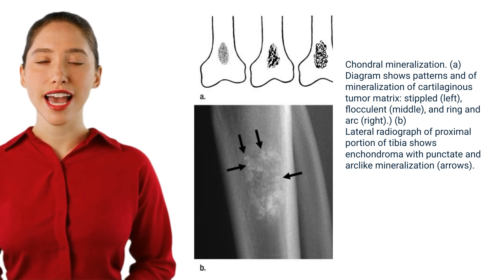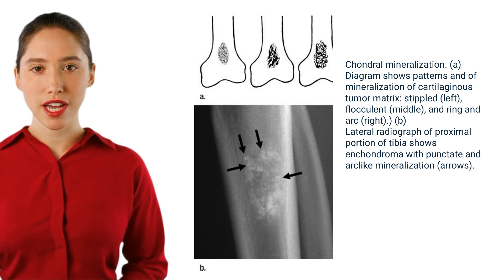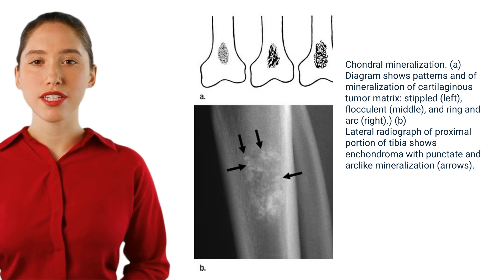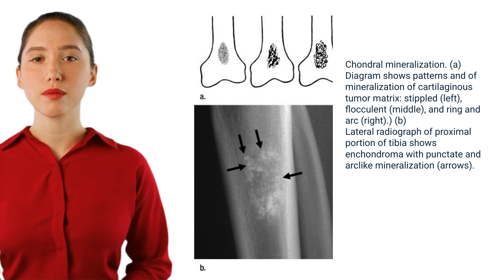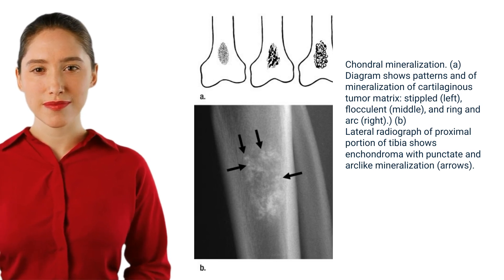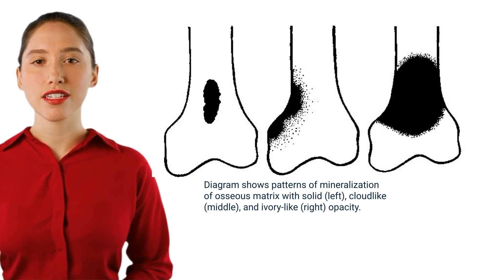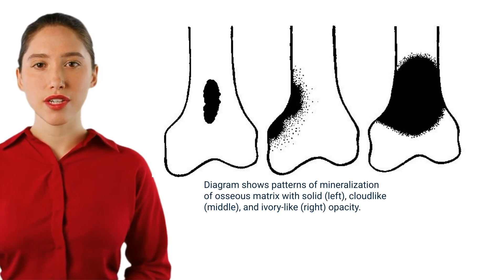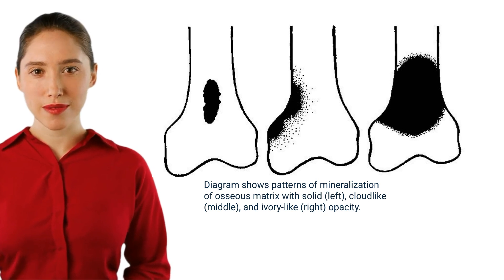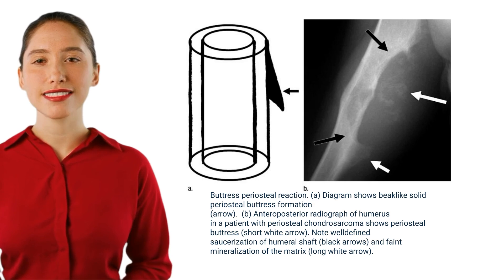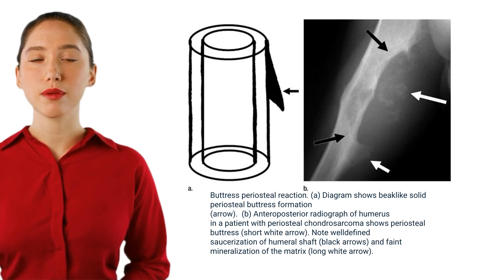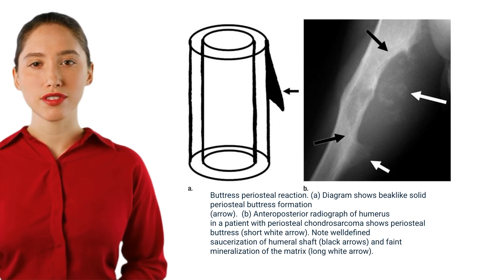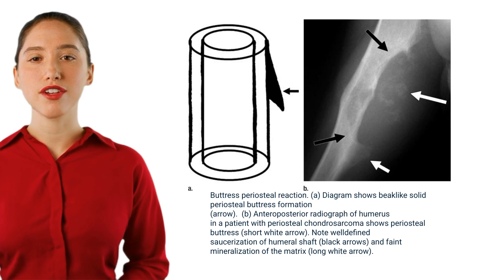Chondral mineralization: diagram shows patterns of mineralization of cartilaginous tumor matrix — stippled, flocculent, and ring-and-arc. Lateral radiograph of the proximal tibia shows enchondroma with punctate and arc-like mineralization. Diagram shows patterns of osseous matrix mineralization — solid, cloud-like, and ivory-like opacity. Buttress periosteal reaction: diagram shows beak-like solid periosteal buttress formation. Anteroposterior radiograph of the humerus in a patient with periosteal chondrosarcoma shows periosteal buttress, well-defined saucerization of the humeral shaft, and faint matrix mineralization.